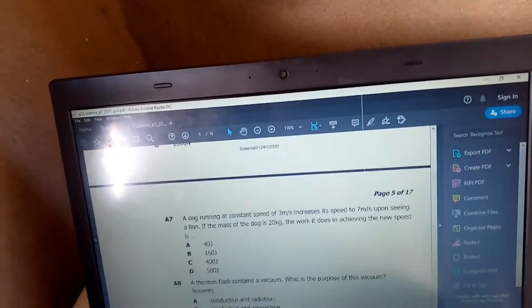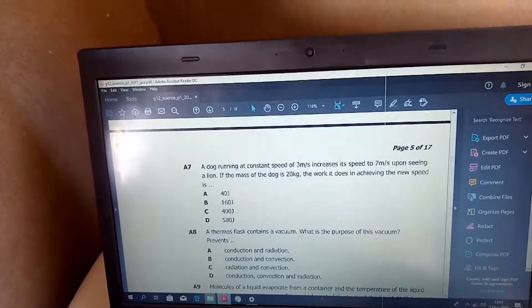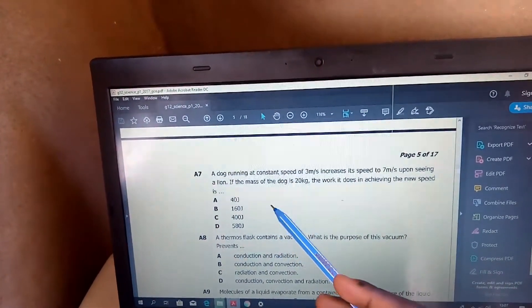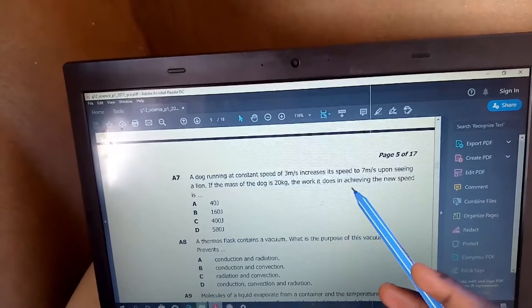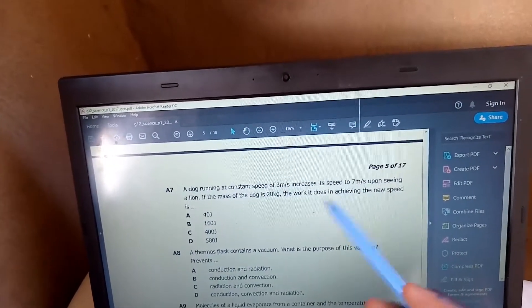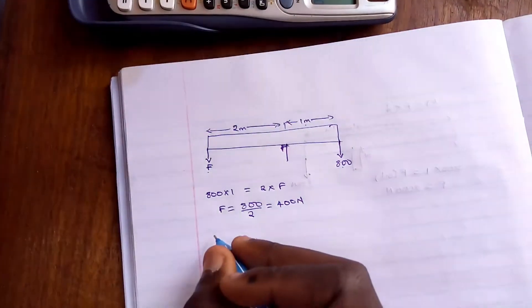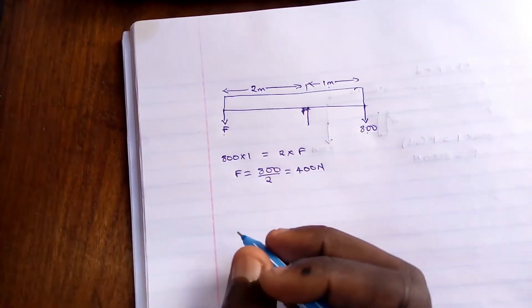Let's look at the next question. A dog is running at a constant speed of three meters per second, increases its speed to seven meters per second upon seeing a lion. If the mass of the dog is 20 kg, calculate the work it does in achieving the new speed. The work is just the same as the kinetic energy.